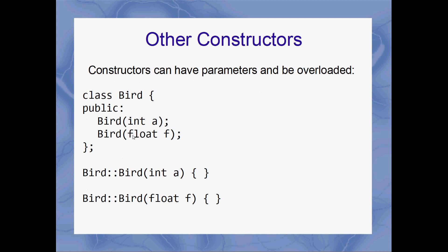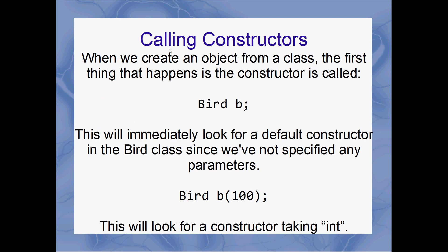So we could specify two constructors for our Bird class — one that takes an integer and one that takes a float. You just specify the bodies of the constructors as separate methods. Constructors can be overloaded and take parameters. Which brings about the point: how do we call a constructor? They're called automatically a lot of the time. When we create an object from a class, the first thing that happens is the constructor is called.